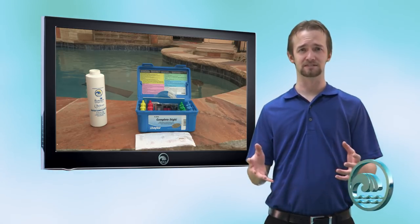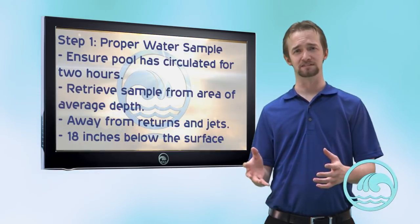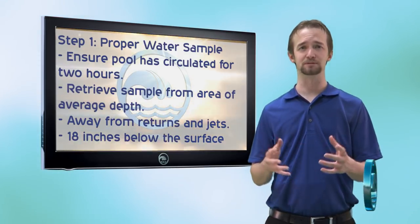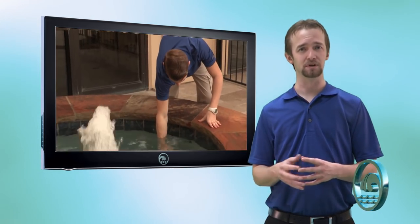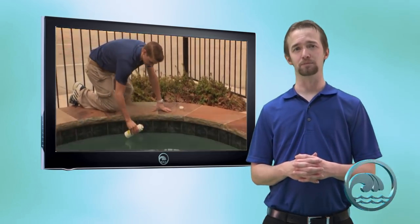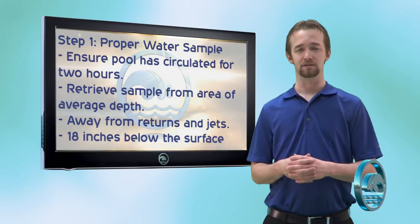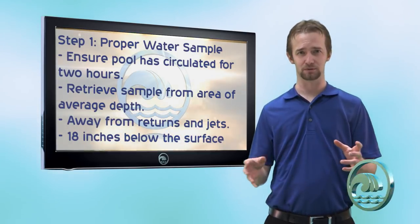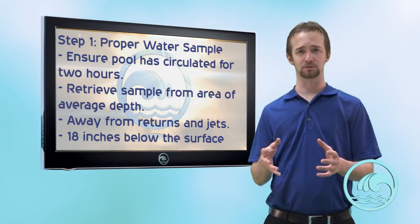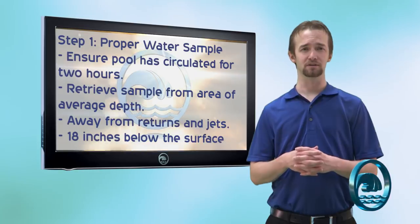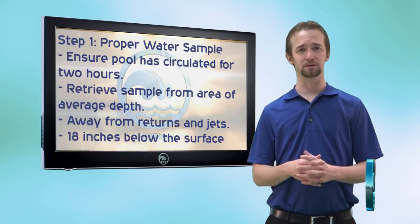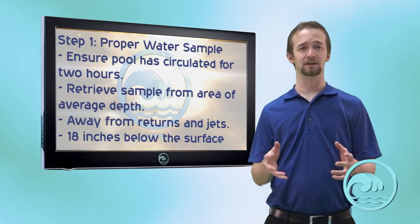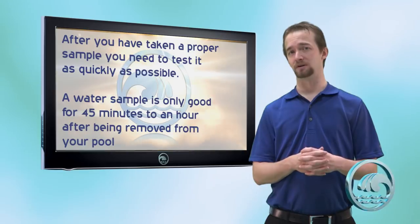The first step to any successful water test is taking a proper water sample. Make sure your pool has been running for about two hours. Collect the water sample at an area of average depth — not the deep end, not the spa, not the shallow end, but where your pool begins to slope from the shallower end to the deeper end. Take your water sample bottle and go at least 18 inches below the water surface before water begins entering the bottle. Take a full sample from 18 inches below the surface at an area of average depth.